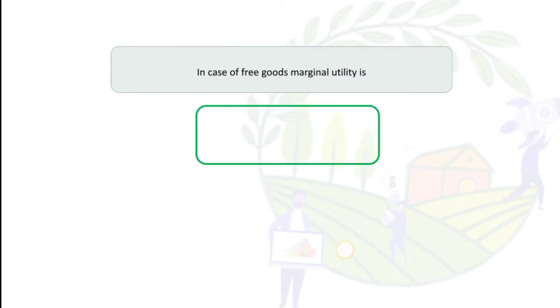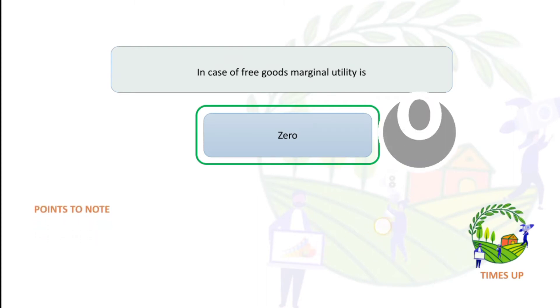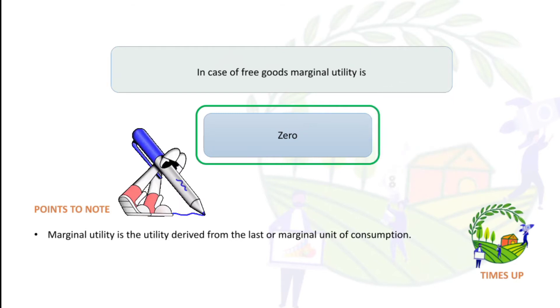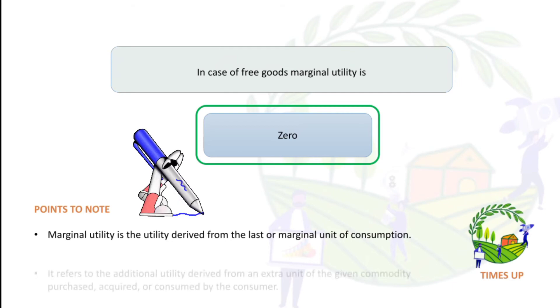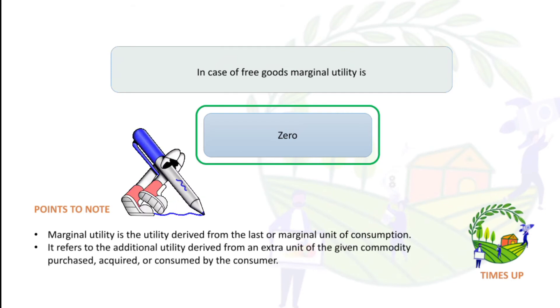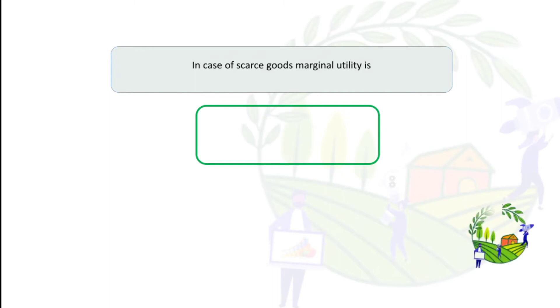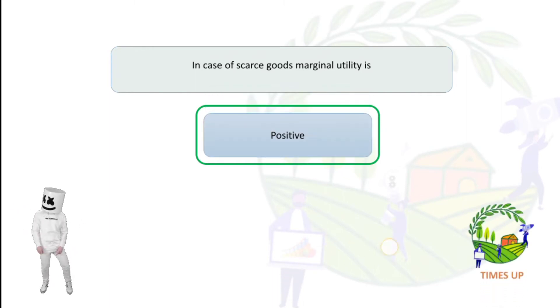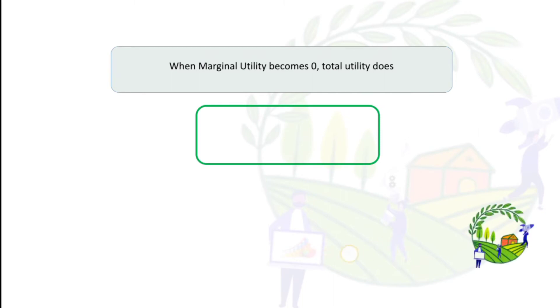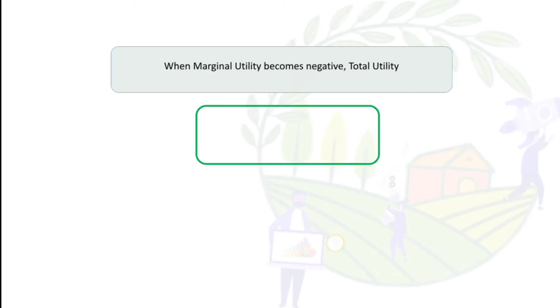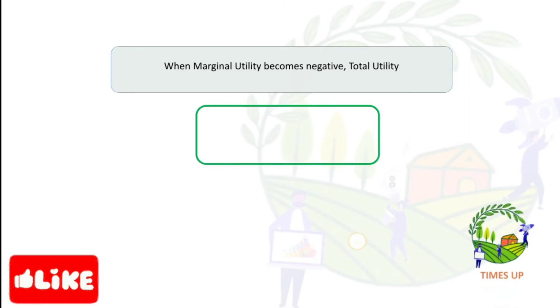In the case of free goods, marginal utility is zero. Marginal utility is the utility derived from the last or marginal unit of consumption. It refers to the additional utility derived from an extra unit of a given commodity purchased, acquired, or consumed by the consumer. In the case of scarce goods, marginal utility is positive. When marginal utility becomes zero, total utility does not increase. When marginal utility becomes negative, total utility decreases.